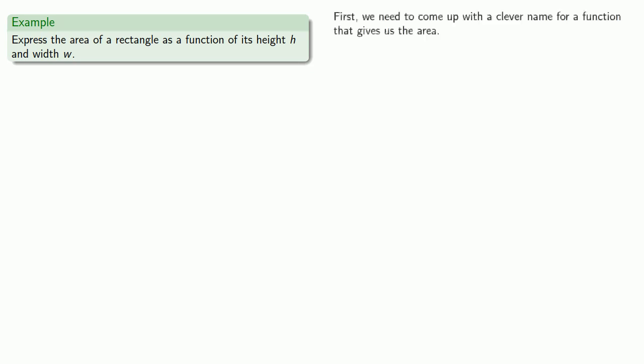So first, we need to come up with a clever name for a function that gives us the area. We'll use F, because F is the first letter in the word area. What's that? Not by your spelling? Okay. We'll use A, because A is the first letter in the word area. It actually doesn't matter if we call it F or A, but it is helpful when our function names have some vague connection to what they're supposed to be.